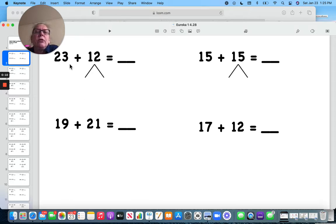Here we have 23 and 12. So when we break it apart, let's take a look. 23 and 10 is 33, 34, 35. There we go.